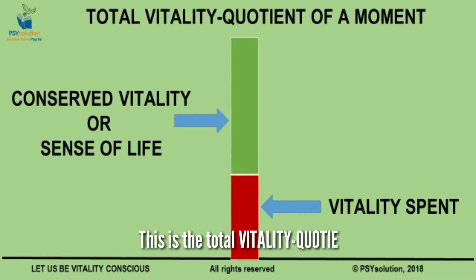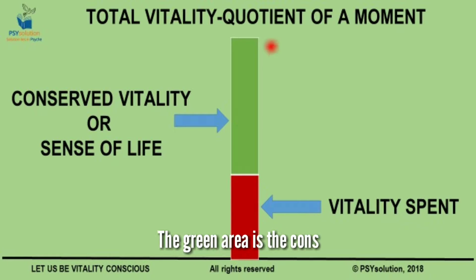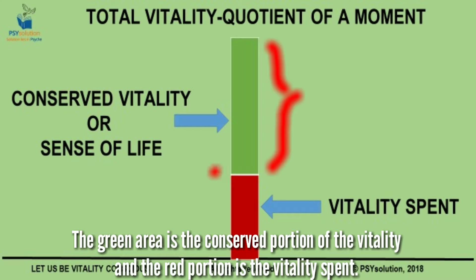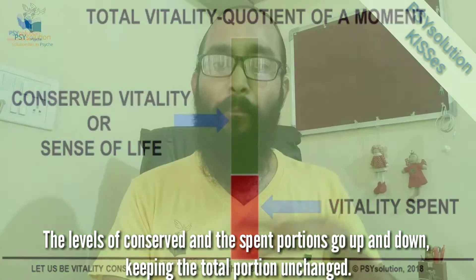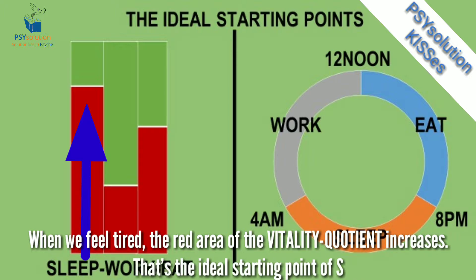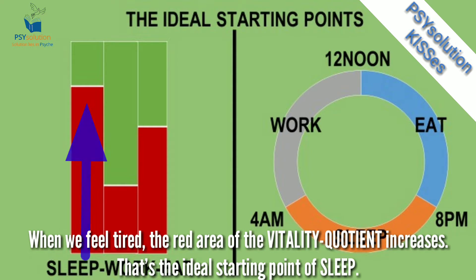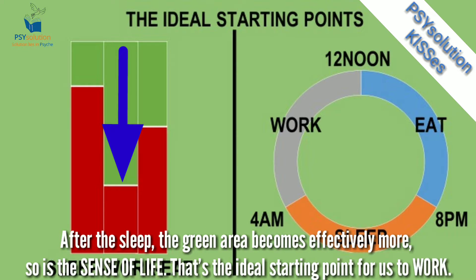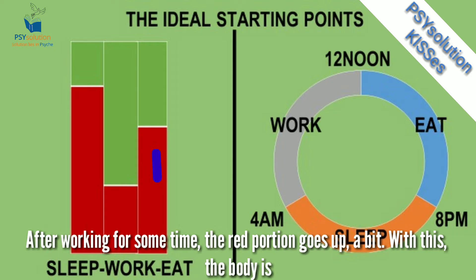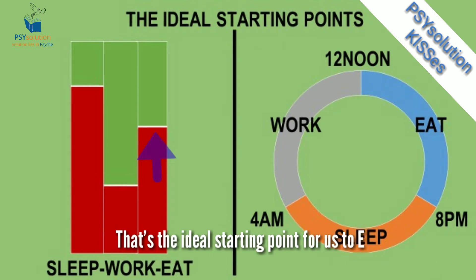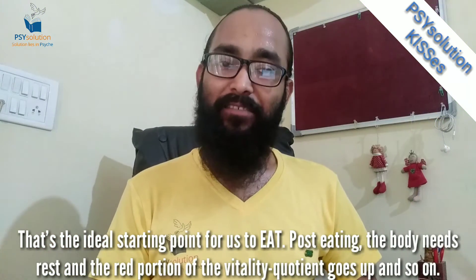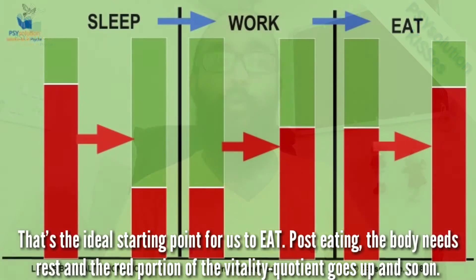This is the total vitality quotient of any moment, which is fixed. The green area is the conserved portion of the vitality and the red portion is the vitality spent. The levels of conserved and spent portions go up and down, keeping the total unchanged. When we feel tired, the red area of the vitality quotient increases — that's the ideal starting point of sleep. After sleep, the green area becomes effectively more, and so is the sense of life — that's the ideal starting point for us to work. After working for some time, the red portion goes up a bit. With this, the body is warmed up to take on the digestion process effectively — that's the ideal starting point for us to eat. Post eating, the body needs rest and the red portion of the vitality quotient goes up, and so on.